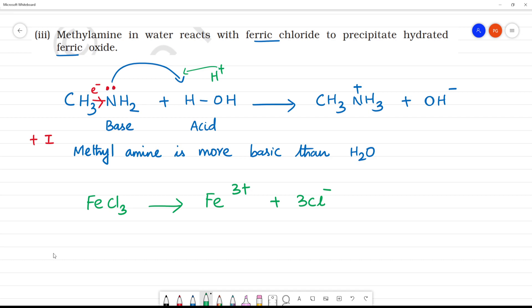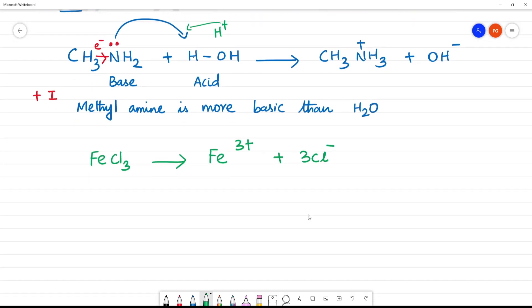Next step is OH- ion combines with Fe3+ ions to form brown precipitate of hydrated ferric oxide. This is Fe3+ and OH- combine. Clear? So, OH- ion.